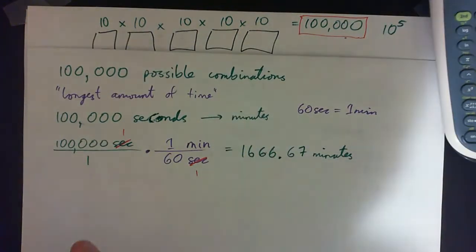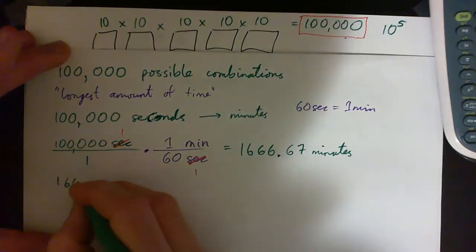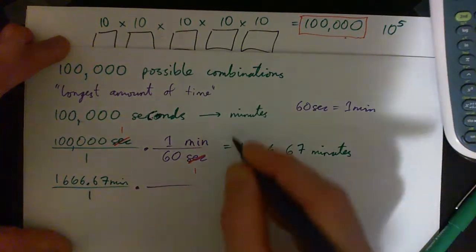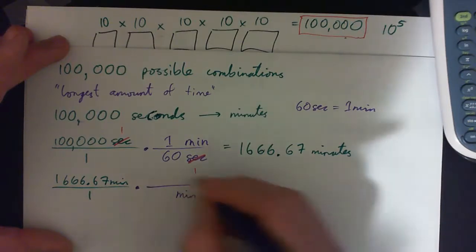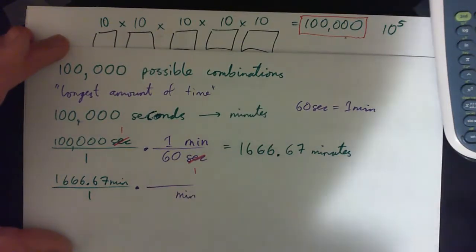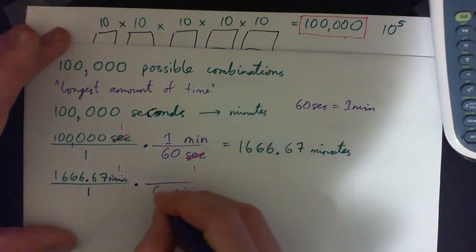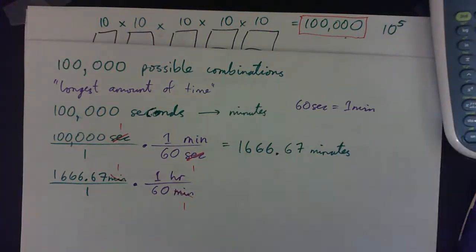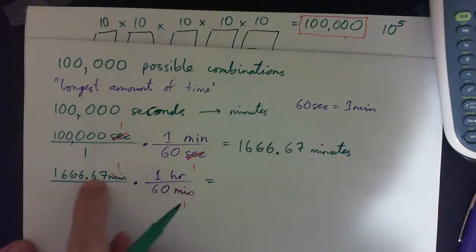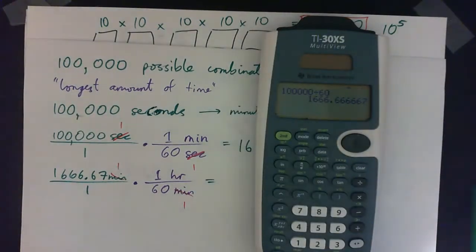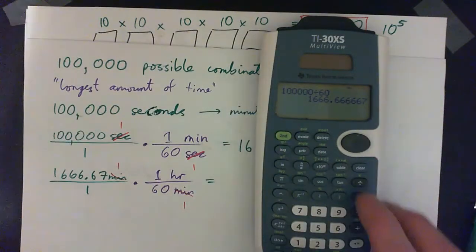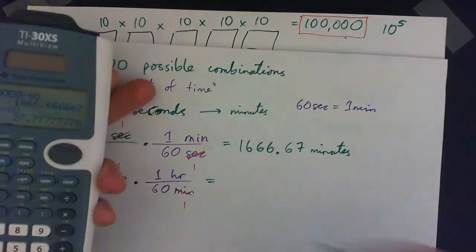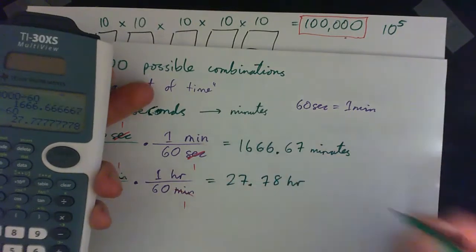We want to turn that now to hours. 1666.67 minutes over 1. Turn it to hours, multiply it by a unit conversion that has hours in it. Minutes down here so the minutes cross-cancel. 60 minutes in one hour. What we're going to do is take this number and divide it by 60 again to get the number of hours. We get 27.78 hours.